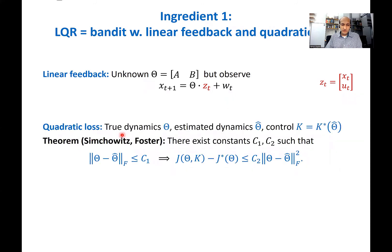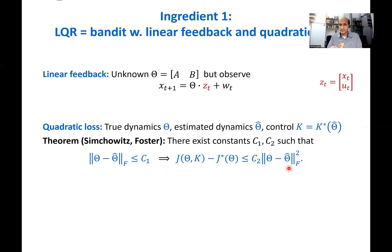By quadratic cost: suppose the true dynamics is theta, we estimate theta hat, and pick the optimal linear feedback controller for theta hat. There's a theorem by Simchowitz and Foster which says that if the distance between the true dynamics and our estimate is less than some constant, then the average cost incurred by our suboptimal controller versus the optimal controller for theta is quadratic in our estimation error. So we have linear feedback, and the regret per time step is quadratic in estimation error. That's the quadratic cost component, and the first ingredient we use.